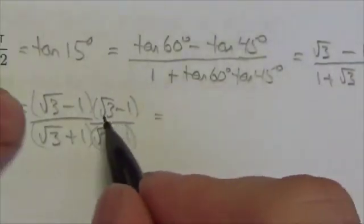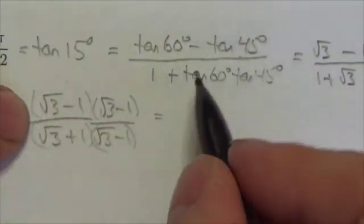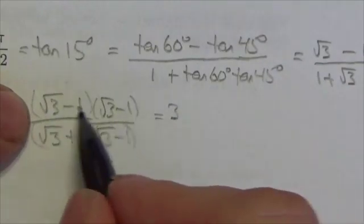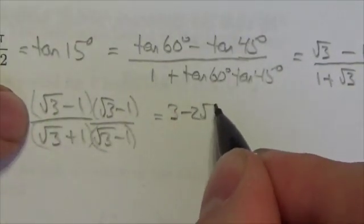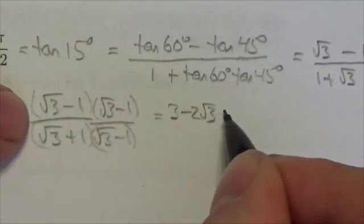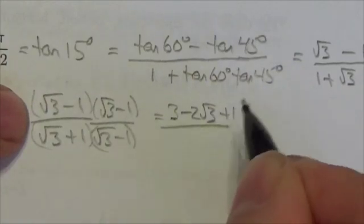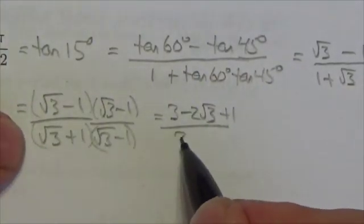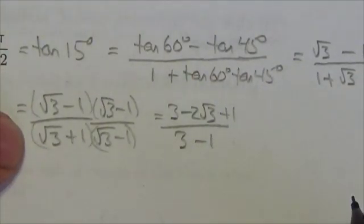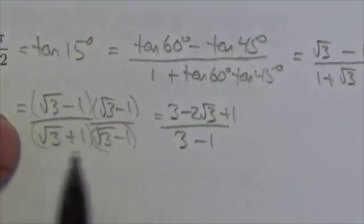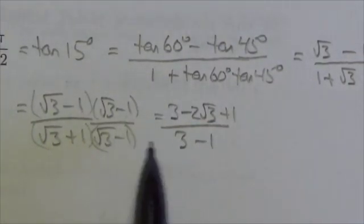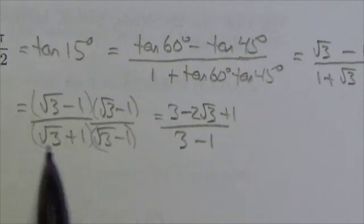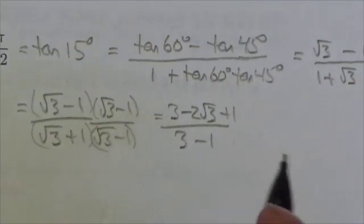In the numerator, that's going to get us, well, root 3 times root 3 is just going to be 3. Minus root 3 minus root 3, so minus 2 root 3. And then, minus 1 times minus 1 plus 1. All over, 3 minus 1. Okay. That's, well, we know that that's going to work like that. I don't even have to expand that out entirely, because I know that these are binomial conjugates that those are going to cancel.